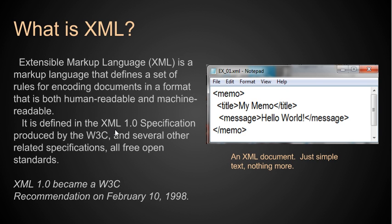XML is defined in the XML 1.0 specification produced by the W3C and several other related specifications, all free and open standards. The W3C is the World Wide Web Consortium — it makes recommendations for all different kinds of things done on the Internet. XML 1.0 became a W3C recommendation on February 10th, 1998, so as you can see it's been around for a while and it's very stable.